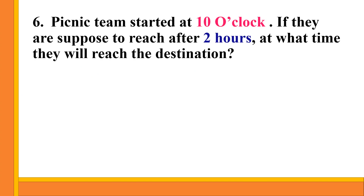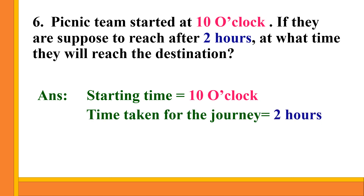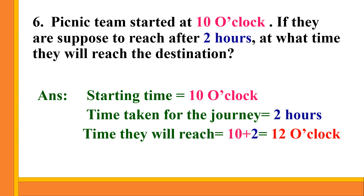Question number 6: A picnic team started at 10 o'clock. If they are supposed to reach after 2 hours, at what time will they reach the destination? Starting time = 10 o'clock. Time taken for the journey = 2 hours. Time they will reach = 10 plus 2 = 12 o'clock. They will reach the destination at 12 o'clock.